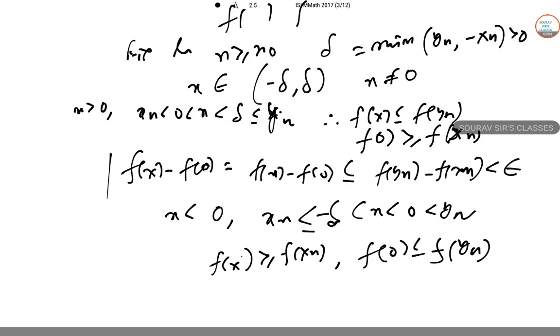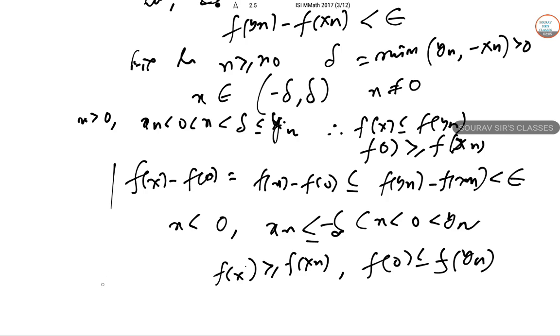Combining these two cases, |f(x) - f(0)| = f(0) - f(x) ≤ f(yn₀) - f(xn₀) < ε in this case as well.